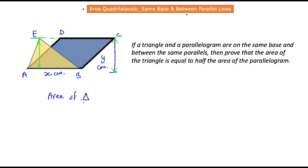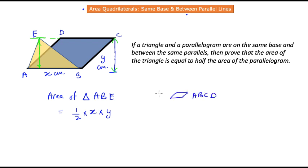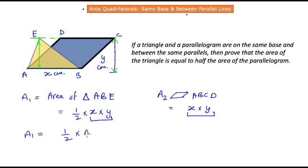The area of triangle ABE equals ½ × base × height = ½ × x × y. Let this be A1. The area of parallelogram ABCD equals x × y, which is A2. Substituting, A1 = ½ × A2. So the triangle's area is half the parallelogram's area — a simple and direct result.